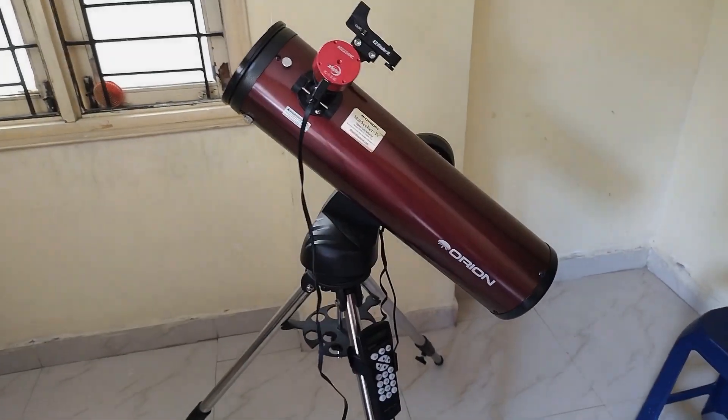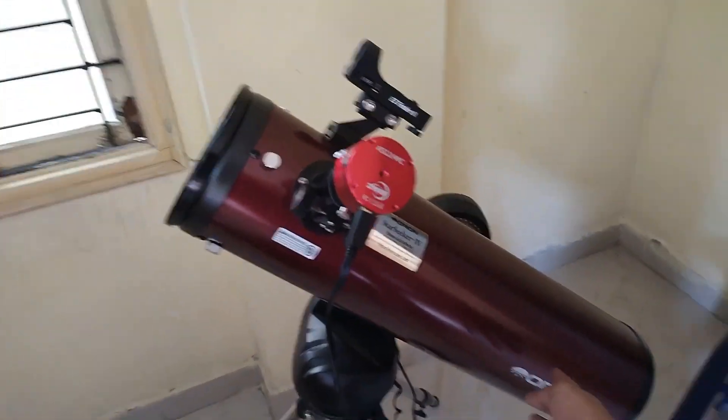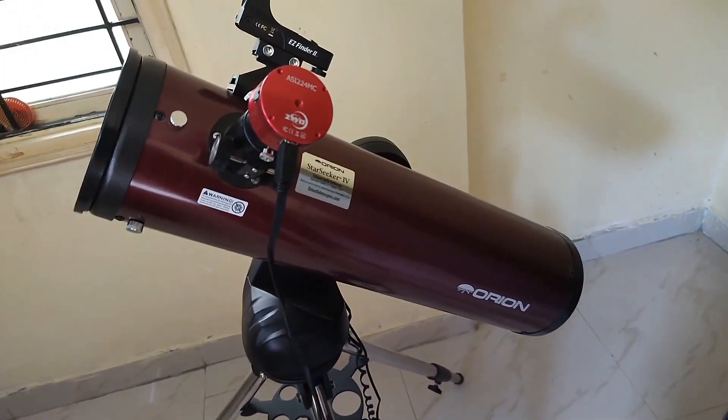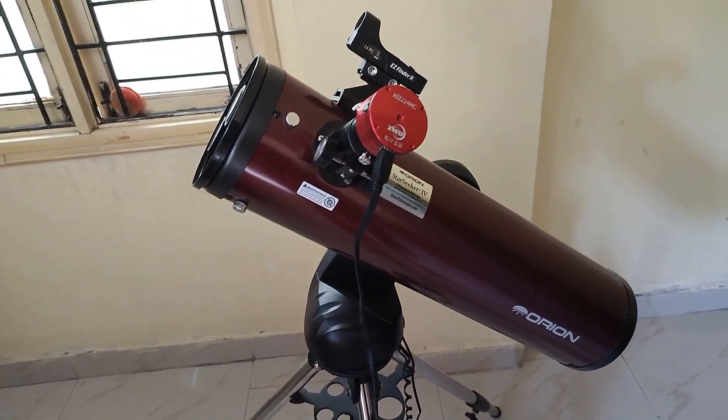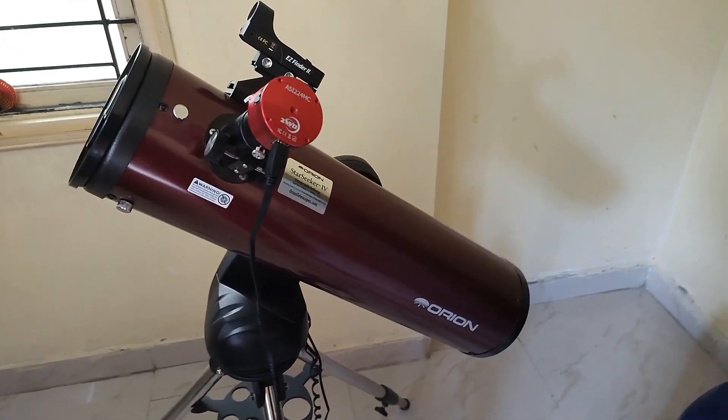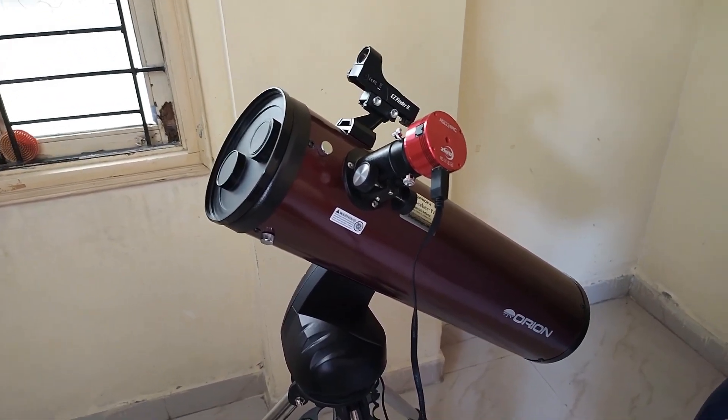Okay, so this is my deep sky imaging rig tonight. My Orion Starseeker 130mm reflector, which is at a focal length of 650mm at f/5 focal ratio.